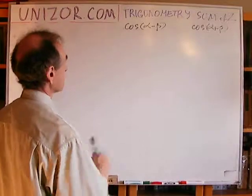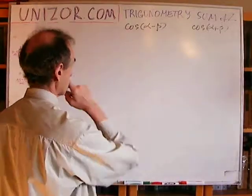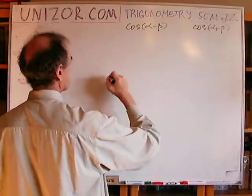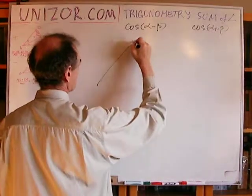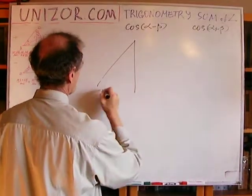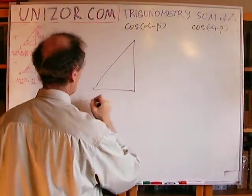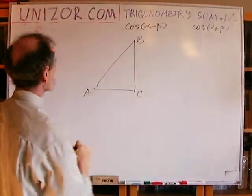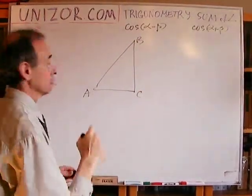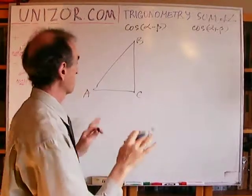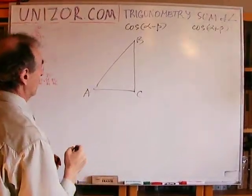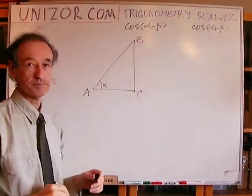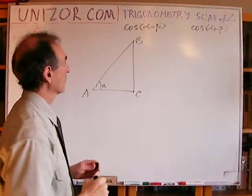Let's start with a difference. I will start with two formulas: cosine for the difference between two angles and cosine for the sum of two angles, assuming all angles — alpha, beta, and their sum — are acute. So let's assume I have a right triangle, and this is an angle alpha.